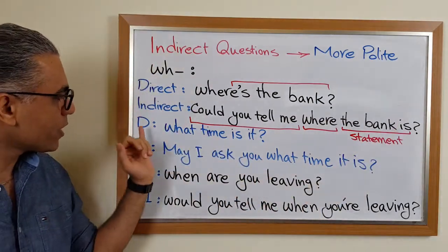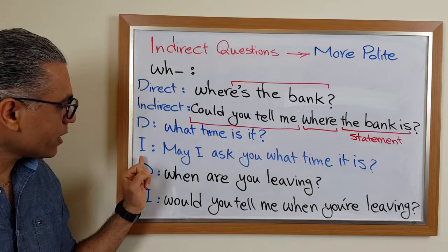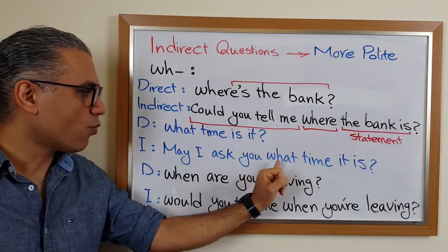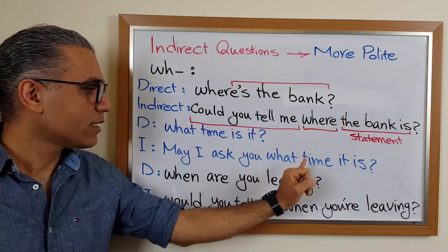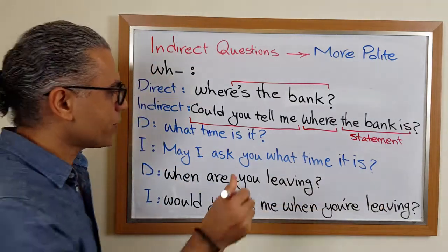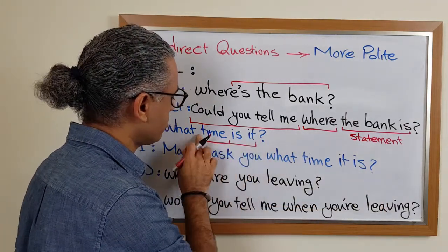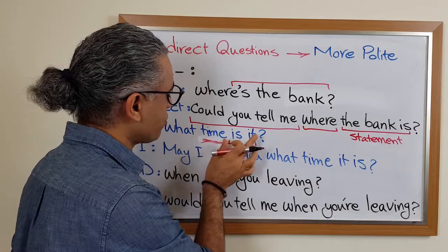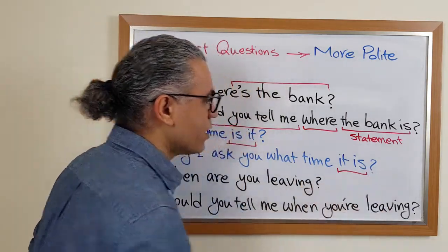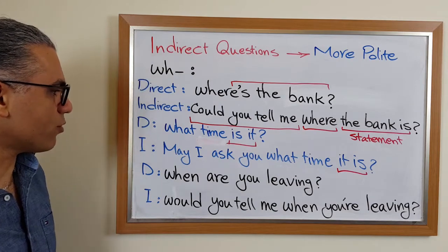Another example: 'What time is it?' Indirect: 'May I ask you what time it is.' So we don't say 'what time is it' anymore. We use 'what time it is' — the statement form, not the question form. Because 'what time' is your WH phrase.